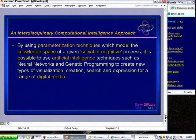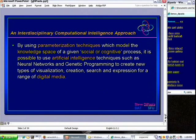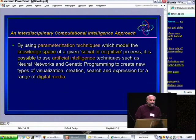The abstract was out there to poke a little bit by saying: by using parameterized techniques which model a knowledge space of a given social or cognitive process, it is possible to use AI techniques such as neural networks and genetic programming to create new types of things. Those things are quite wide — visualization, creation tools, search tools, and expression tools. These parameterization techniques create a space, and within that space, as long as you have a little bit of knowledge of it, you can move through it or have your user move through it.